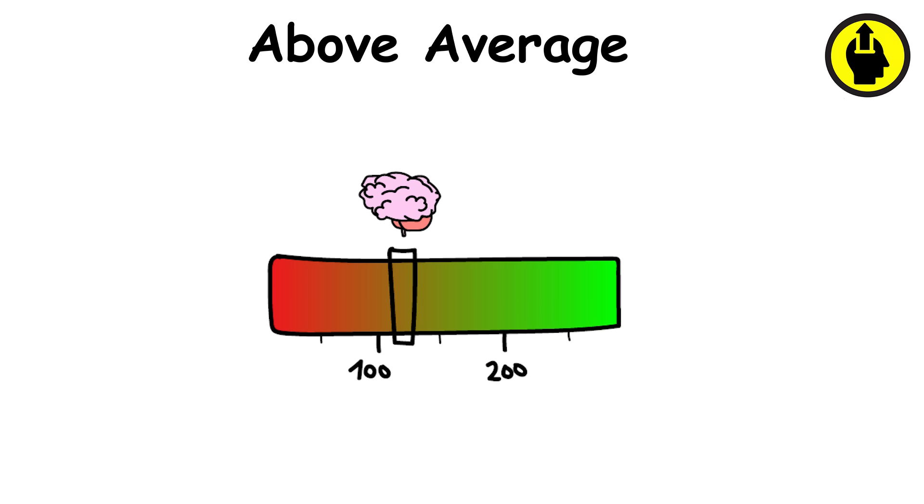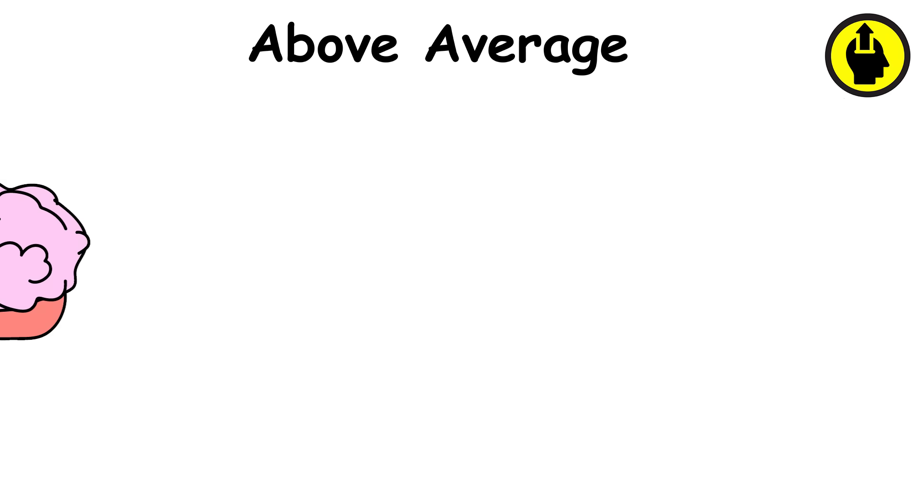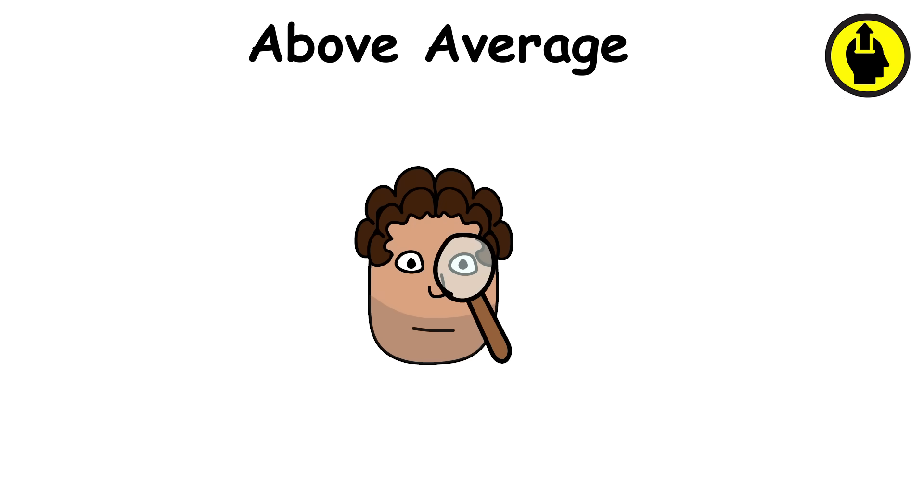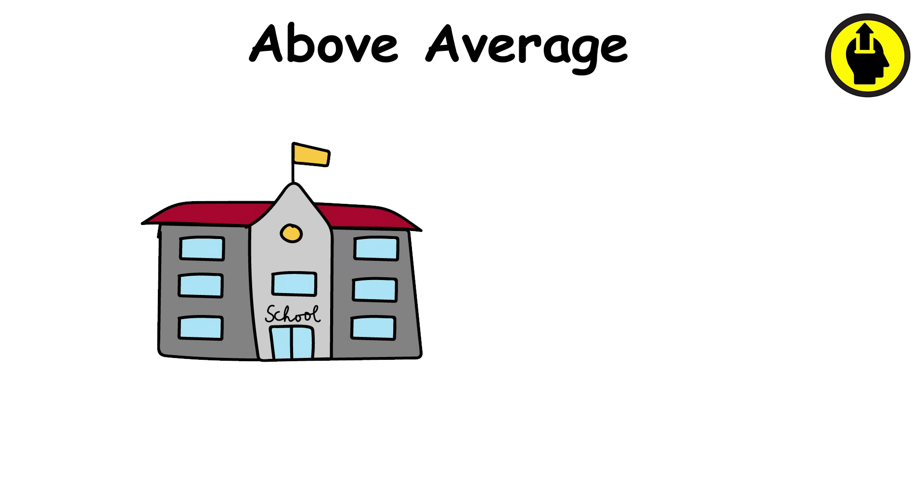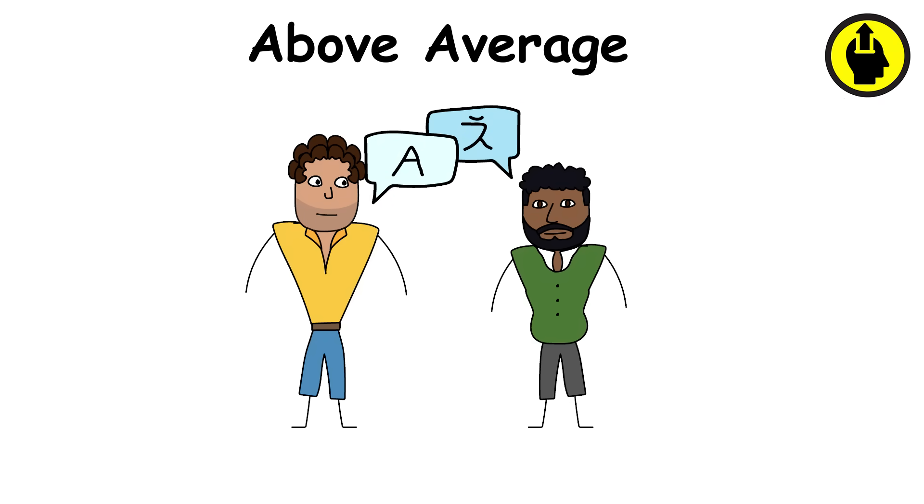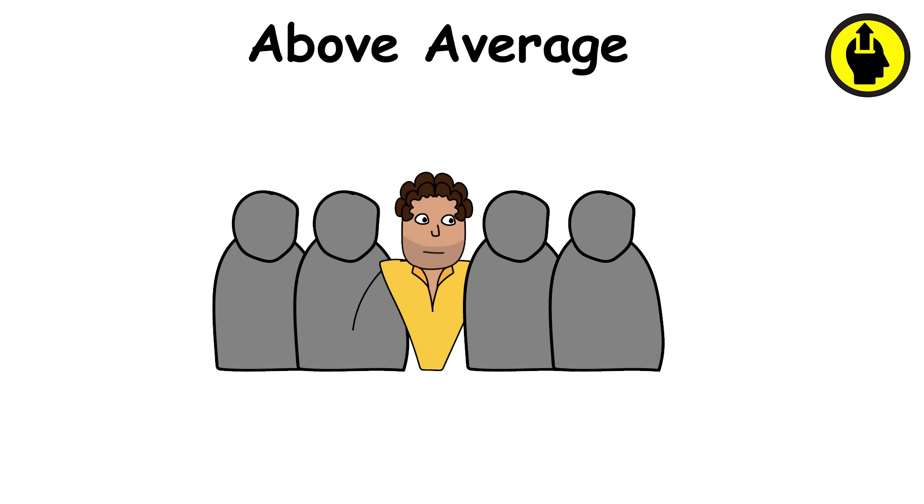Above average intelligence is where thought gets fast. You don't just learn, you leap. You spot patterns others miss. You see outcomes forming long before others even realize there's a problem. School may have felt slow, repetitive. Conversations sometimes feel like waiting in line.